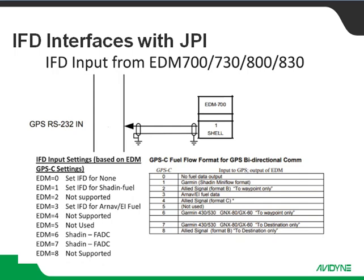GPS-C setting of five, at least as of this recording, is not used, so we're not going to do anything with that. GPS-C setting of six is your Garmin 43530 format to waypoint only — on the IFD side we accept that as Shaden FADC. GPS-C setting of seven is the Garmin 43530 to destination only — the IFD also accepts that as Shaden FADC. GPS-C setting of eight is another Allied Signal format, also not supported by the IFD. The big takeaway is you can use any of these settings except for the Allied Signal formats, but the IFD does need to be set accordingly for that information to come across correctly.